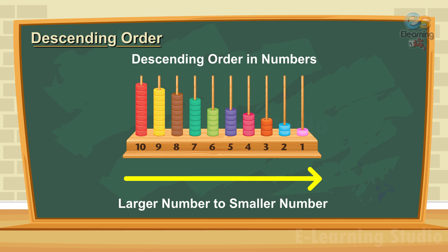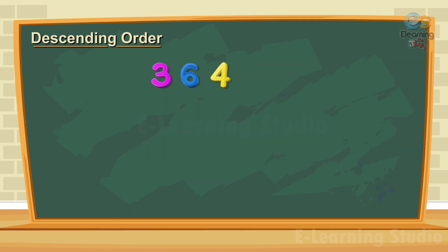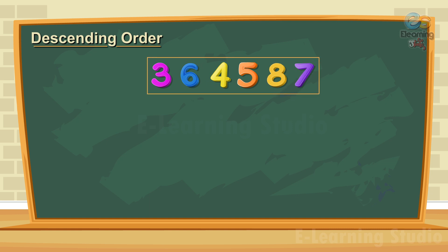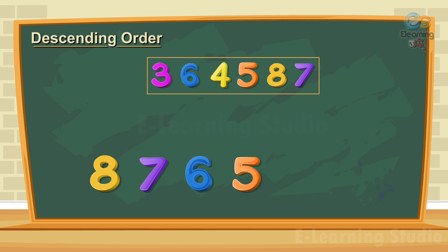Descending order: while dealing with numbers, descending order means moving from a larger number to a smaller number. See the numbers given on the screen: 3, 6, 4, 5, 8, 7. To arrange them in descending order, we first find the largest number, which is 8. The number smaller than 8 is 7, so the next number will be 7, and similarly next will be 6, and so on.